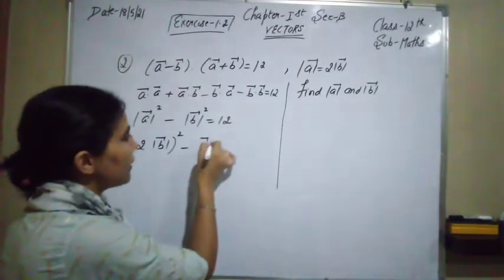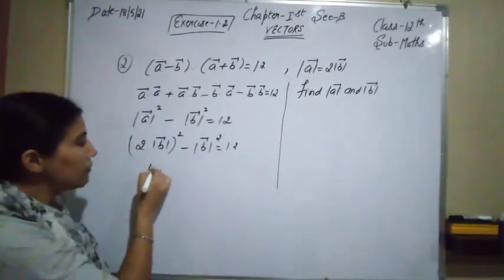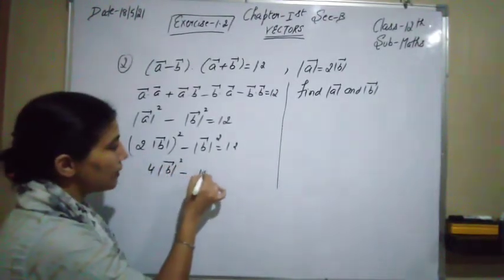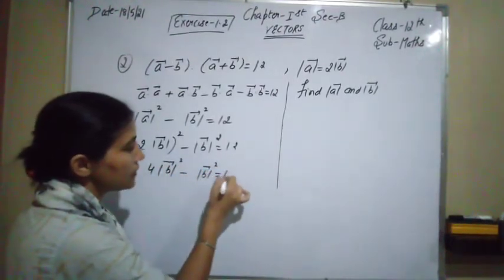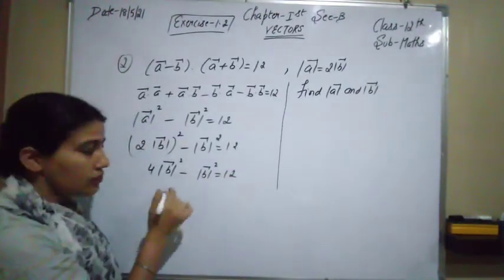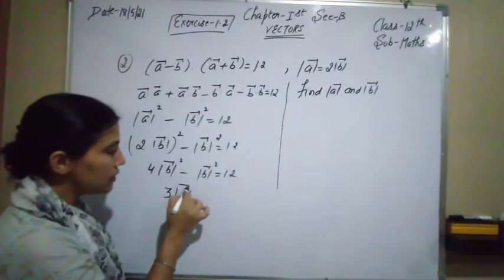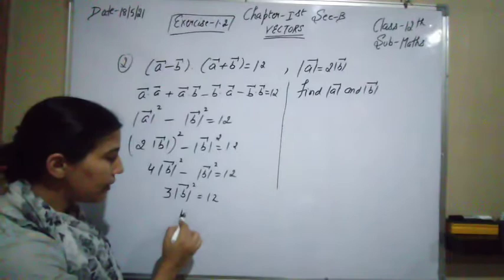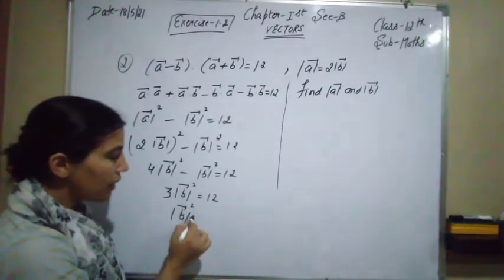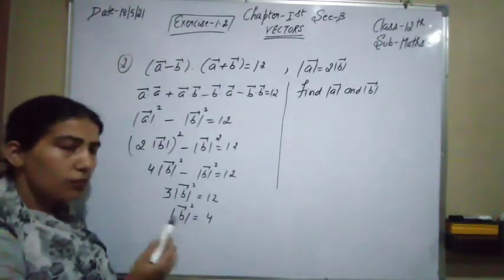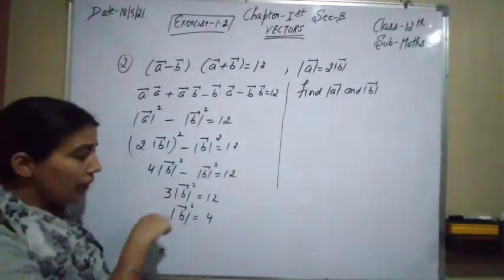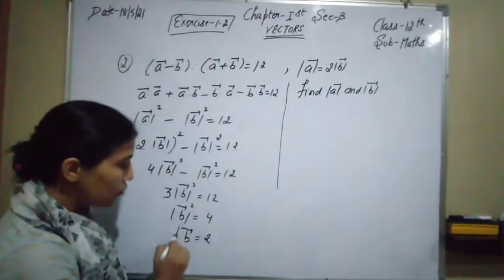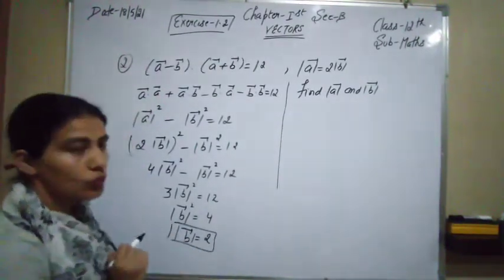That gives 3|b⃗|² = 12, so |b⃗|² = 4. Again, magnitude is always positive, so |b⃗| = 2. Now, since |a⃗| = 2|b⃗| = 2 × 2 = 4, the magnitude of a⃗ is 4.